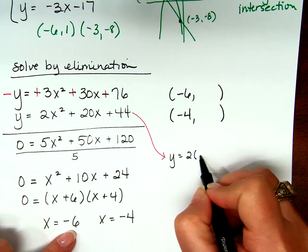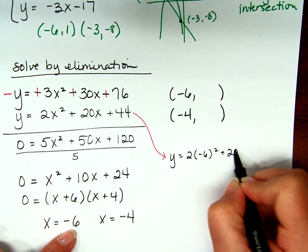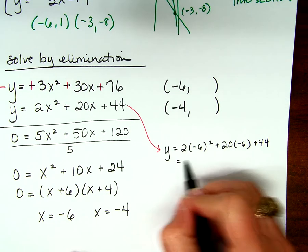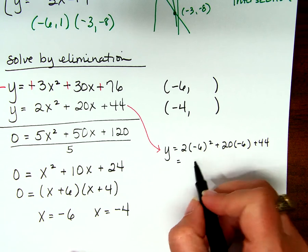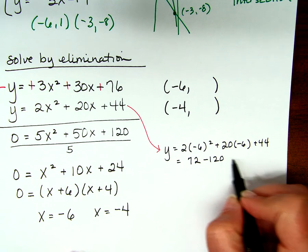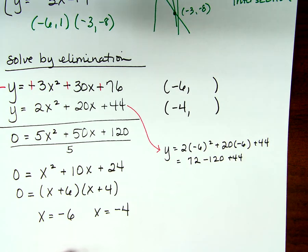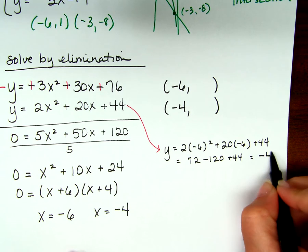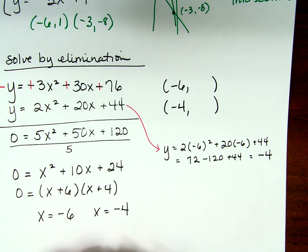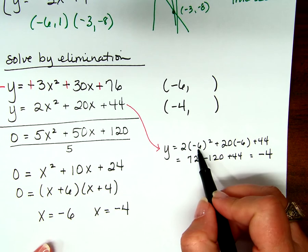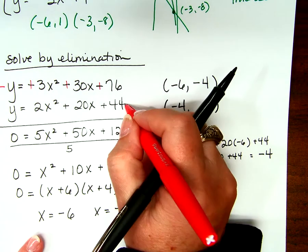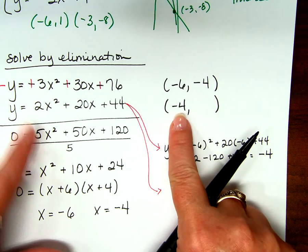Y equals 2 times negative 6 squared plus 20 times negative 6 plus 44. Negative 6 squared is 36, times 2 is 72, minus 120, plus 44 — I got negative 4. So when x is negative 6, y is negative 4. That's one of my points of intersection.